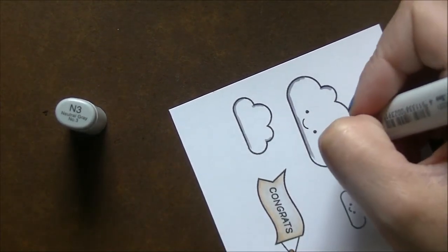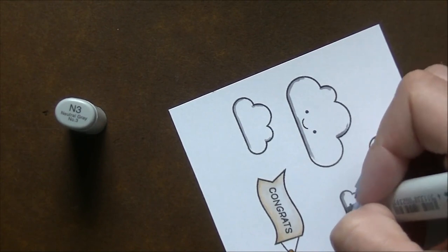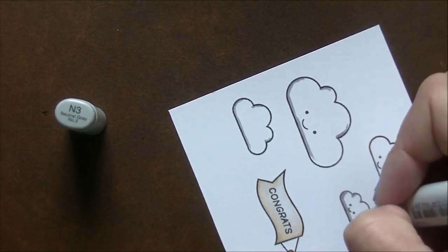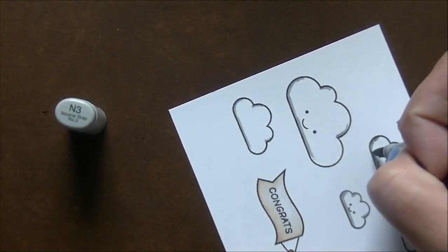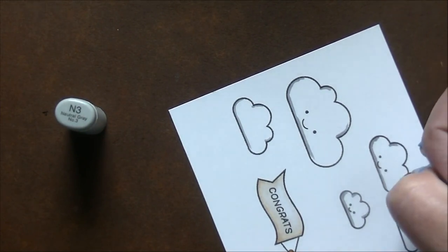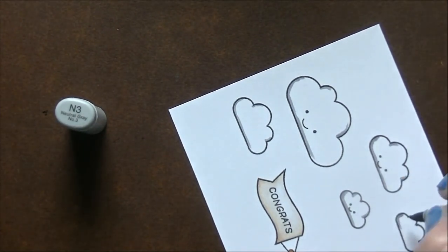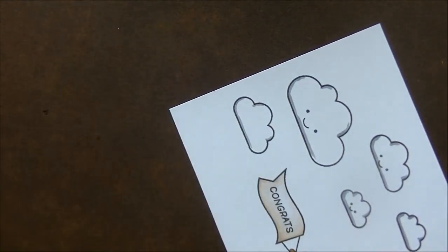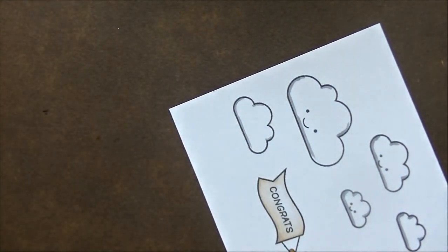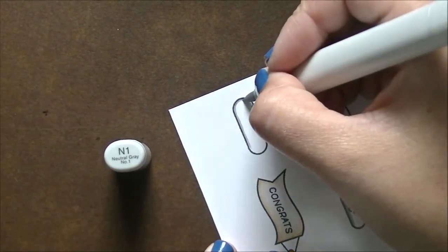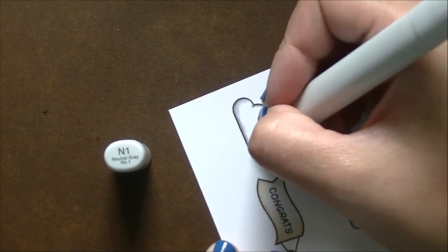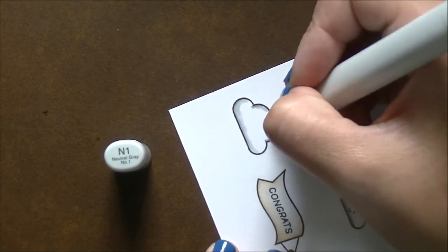So we're just working on our puffy clouds now. I'm going to start with N3 and I'm going to do them all at once because it's super simple and super basic coloring. I'm just putting a shadow on the bottom side and then on the left side of all of the clouds and then just the right side of that one little bump just because I thought it needed something there.